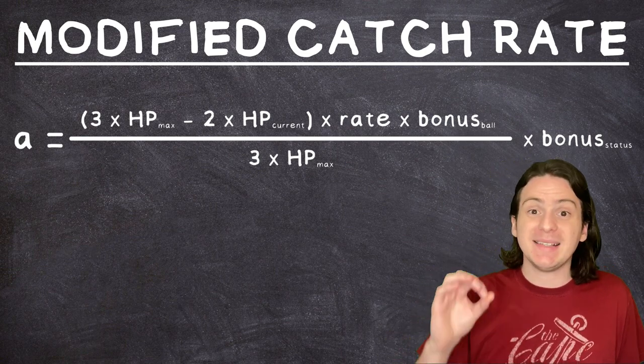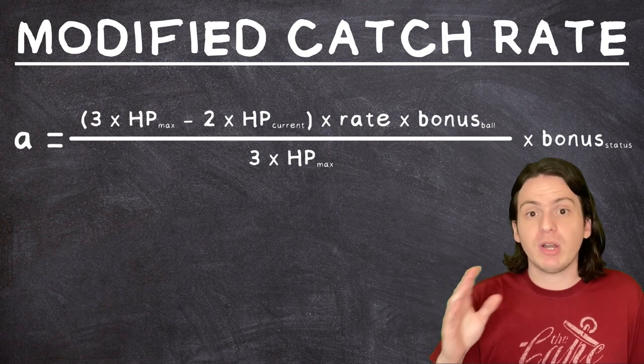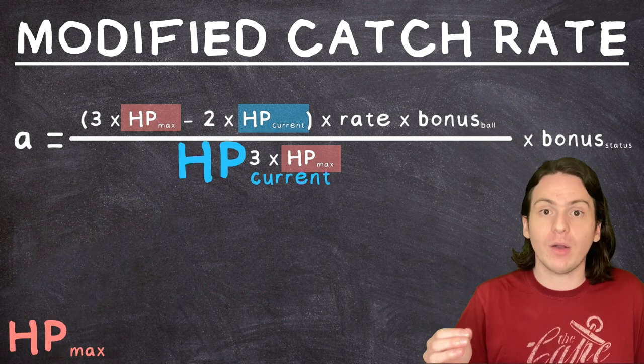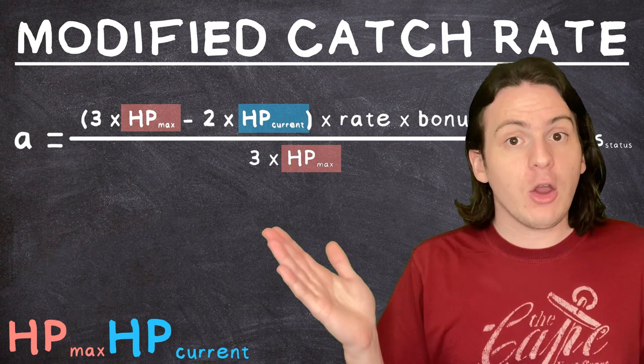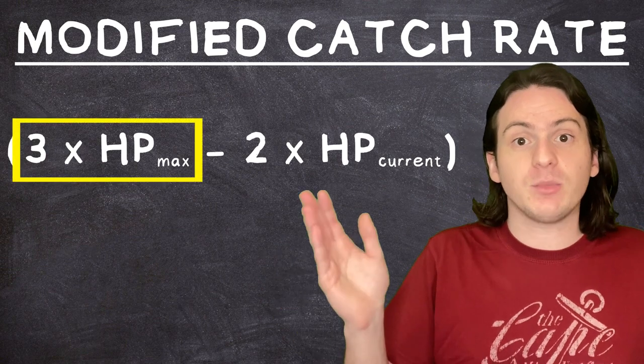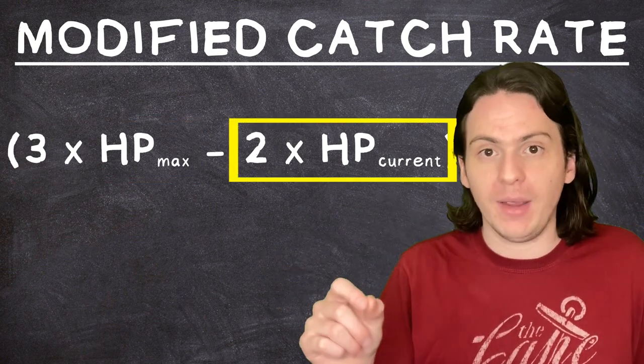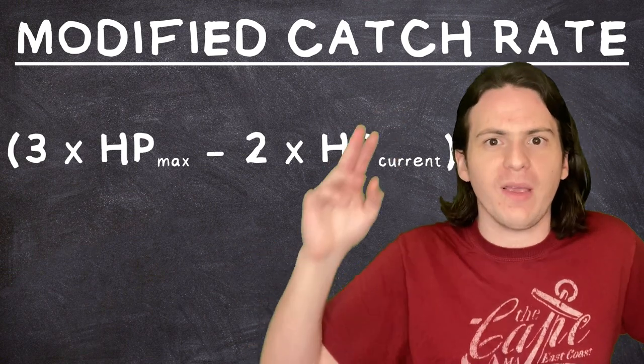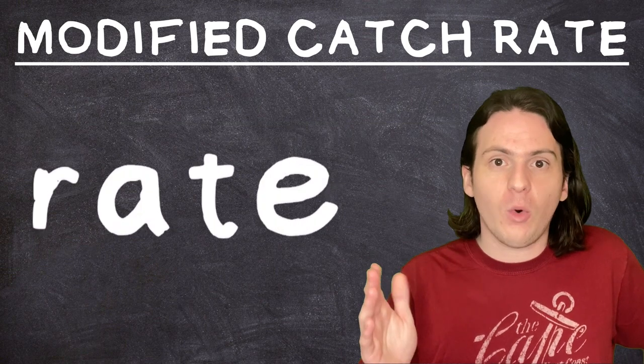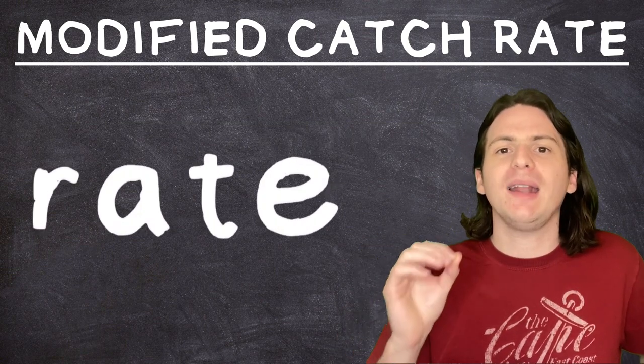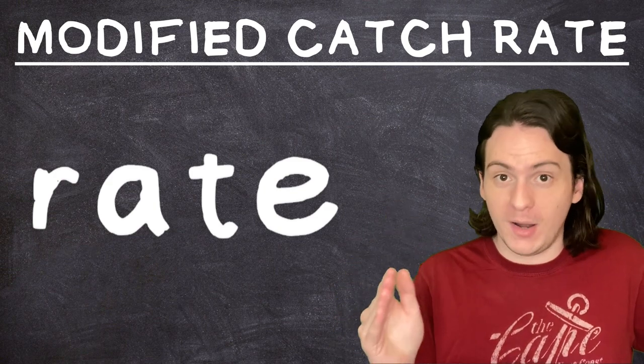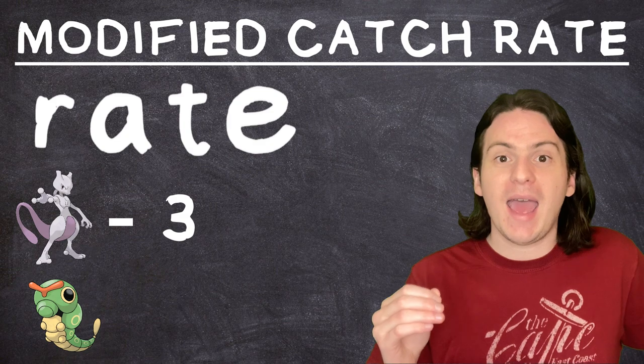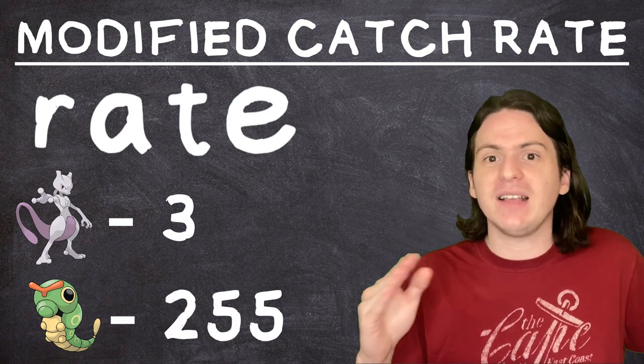We got a bunch of variables here that makes it seem super complicated, but it's actually pretty straightforward. HP max represents the maximum HP of the Pokémon you're trying to catch, and HP current represents how much HP it actually currently has. Here, we just multiply the Pokémon's max HP by three, then subtract twice the current HP from it. Why these multipliers? I don't know, I'm an engineer, not a mathematician. I don't worry about proving things, I just take people's words for it. The rate, as I briefly mentioned before, is a number that represents how hard a Pokémon is to catch. The lower the catch rate value, the harder the Pokémon is to catch. Most legendary Pokémon have a rate of three, and any easy Pokémon like Caterpie or something has a catch rate of 255, and everything else lies somewhere in between.